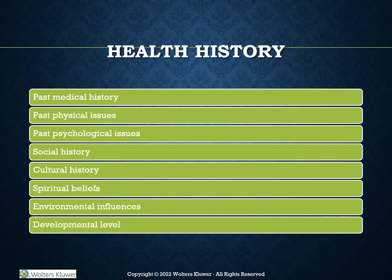Some of the components of a health history include past medical history, past physical issues, past psychological issues, social history, cultural history, spiritual beliefs, environmental influences, and developmental level.